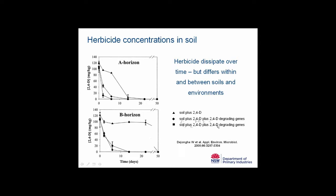This study also looked at the application of herbicide-degrading microorganisms, and when genes are present that can degrade the herbicide, the lifetime of the herbicide is a lot shorter. What this suggests is that herbicides will probably have the largest effect immediately after application, but over time this effect is attenuated — there may be a short duration effect that doesn't continue over time.